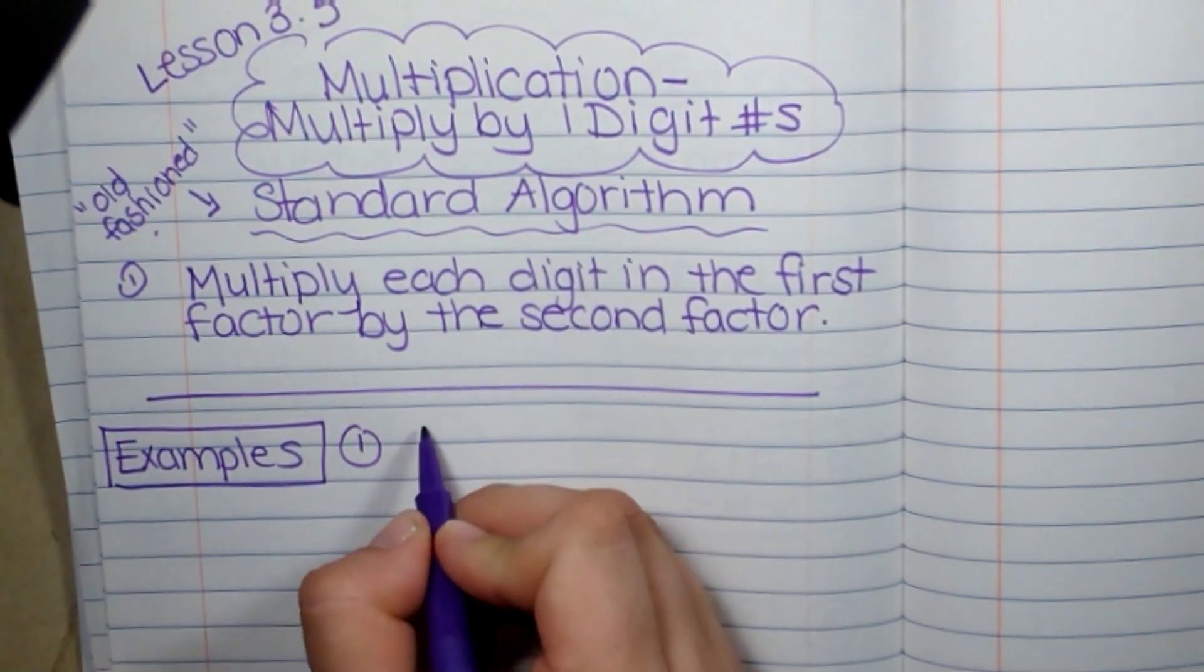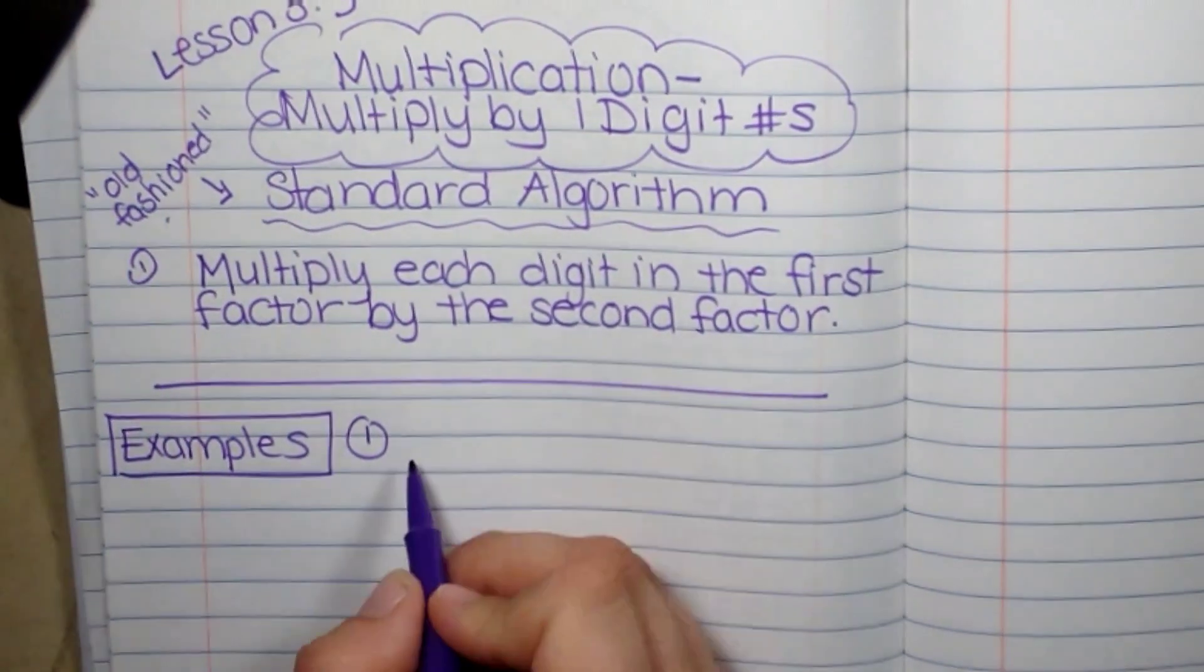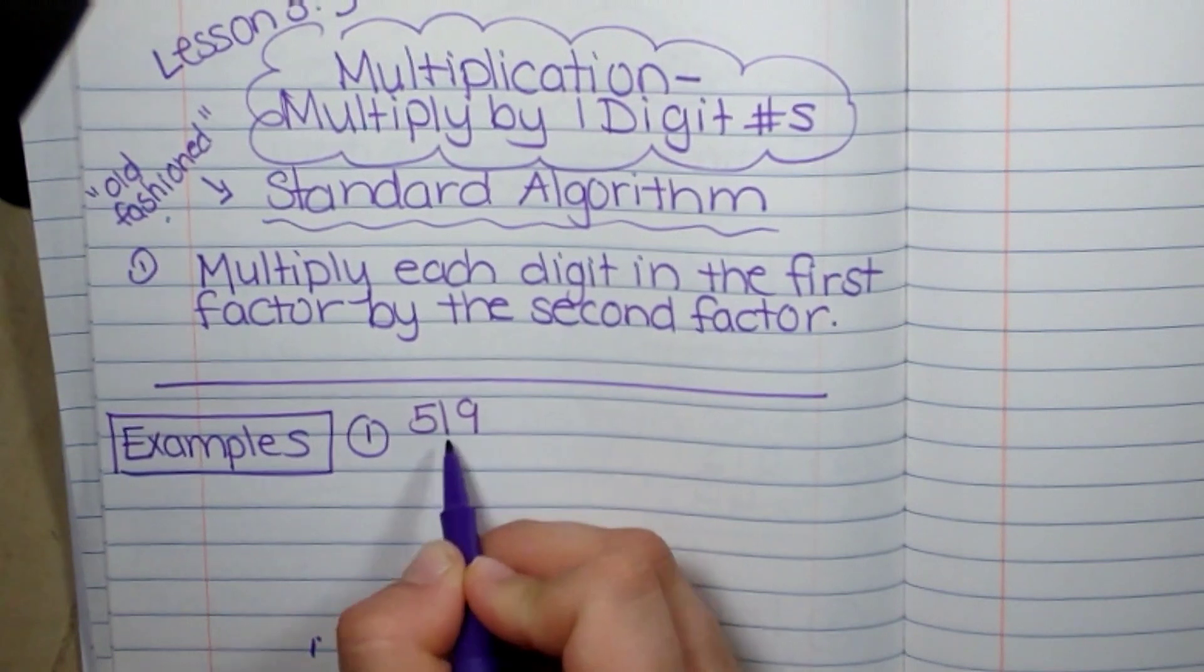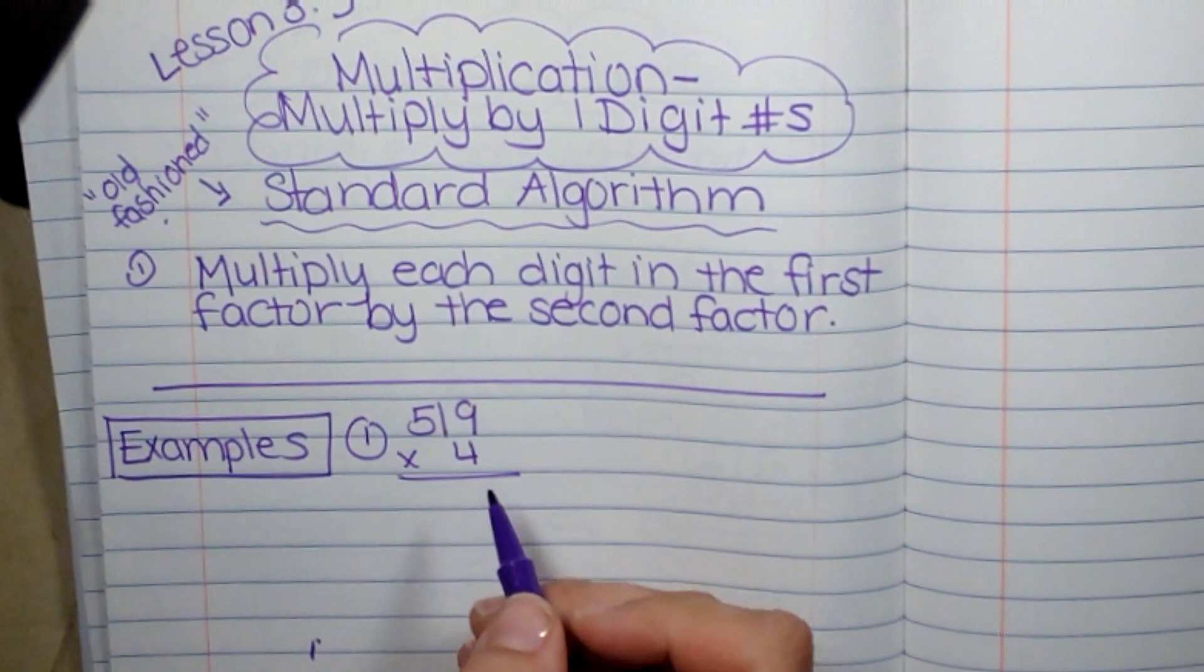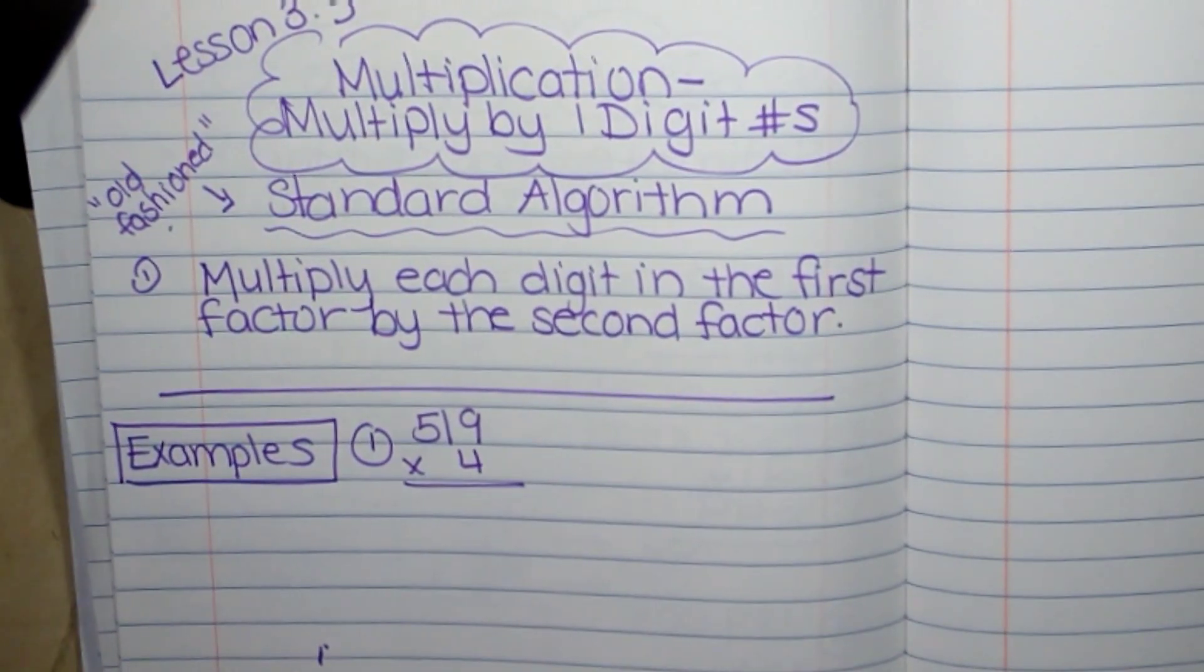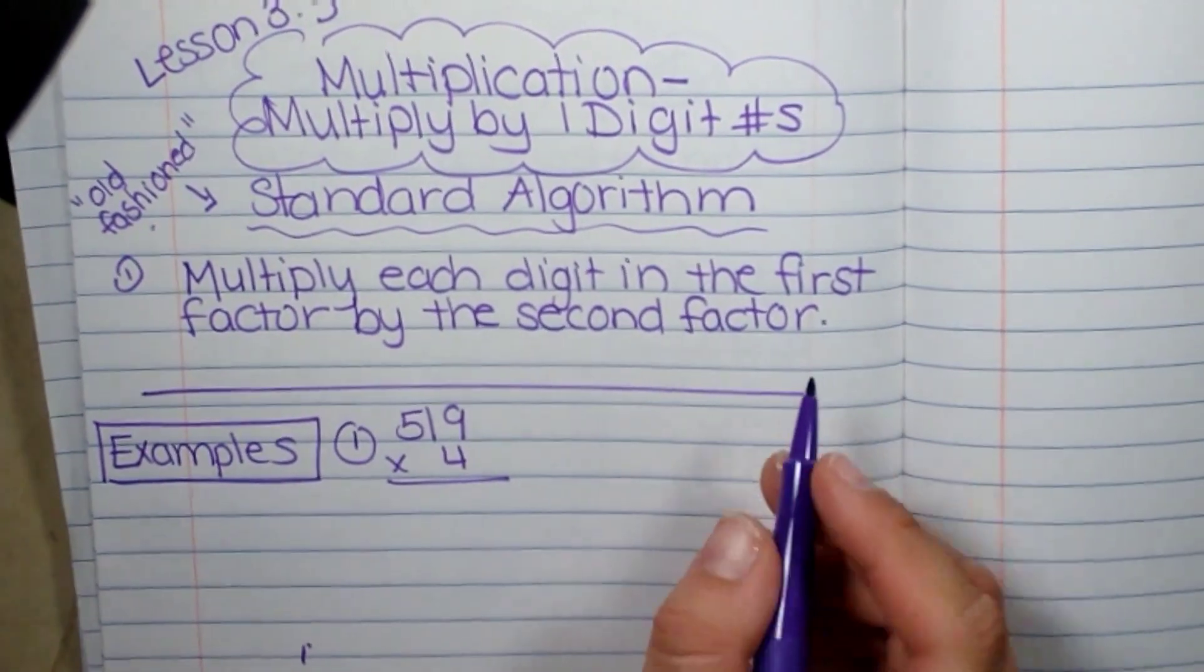Okay, so for example, 519 times 4. The bottom, the second number, second factor will always be one digit in this lesson. Next lesson, we will move on to having two. Because that's got some extra steps.